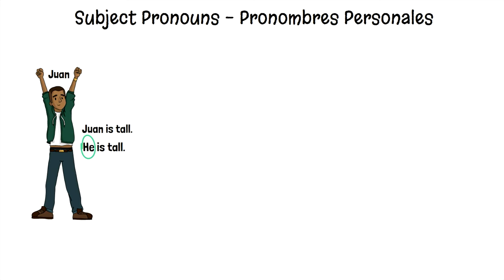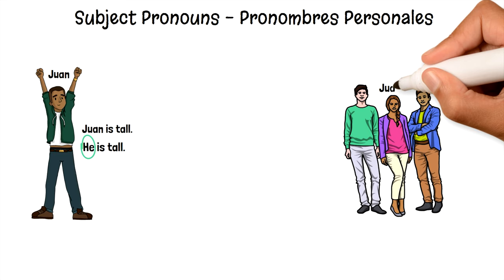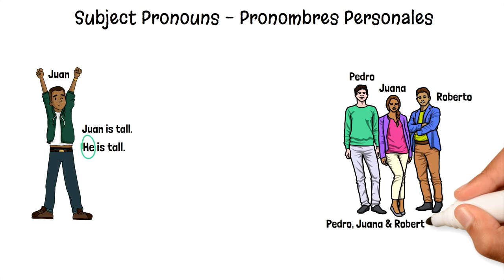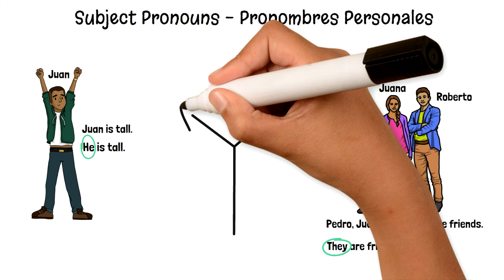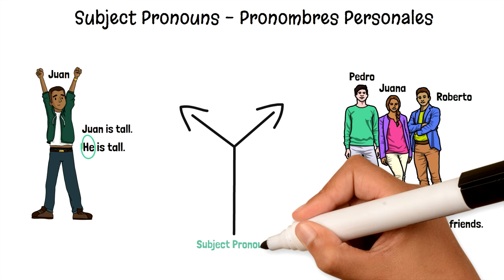Let's look at another example. These are Juana, Pedro, and Roberto. We could say Pedro, Juana, and Roberto are friends. Or we could use the subject pronoun and say they are friends. They is what we call the subject pronoun — it replaced their names. In both of these cases, we use subject pronouns, or what we call in Spanish, pronombres personales, to replace the names.